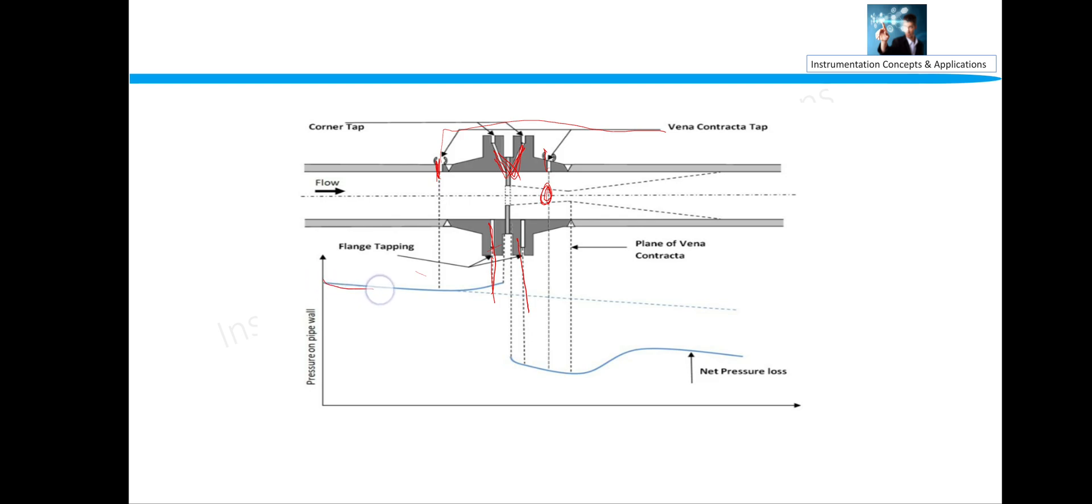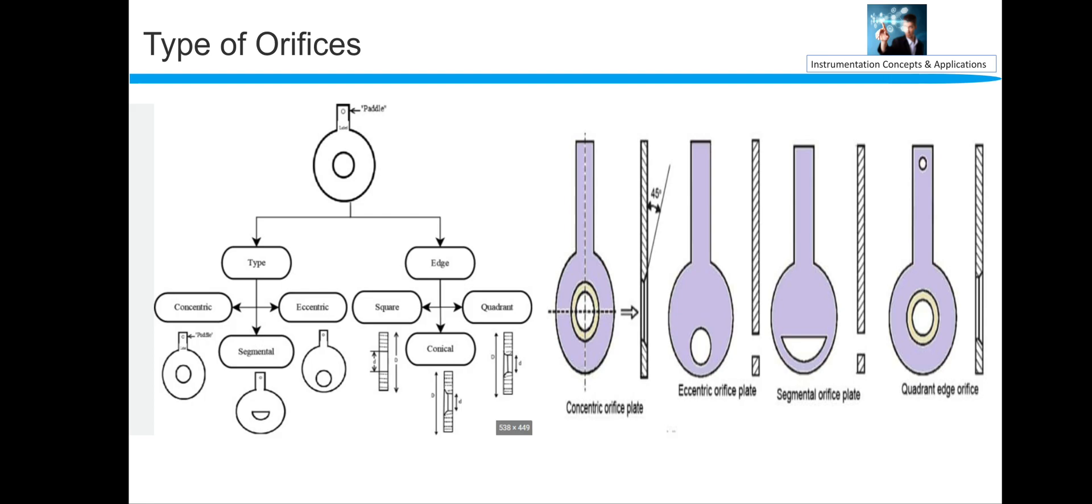So you can see this is the pressure, and we have a pressure drop, and then some recovery is there. So finally some delta P is always there. So this is the permanent pressure loss. This is the design consideration of considering the flange tap of any orifice.